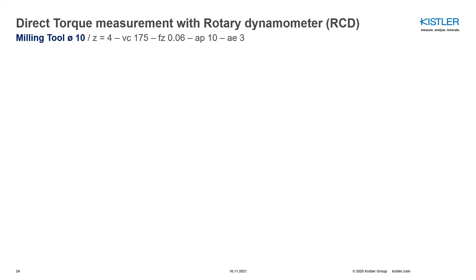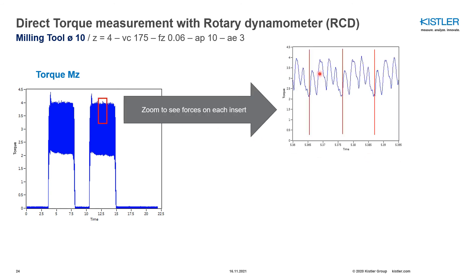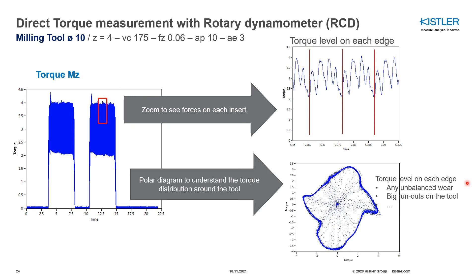In face milling with four inserts, looking at a torque measurement and zooming in, you can clearly see the moment distribution around each insert. Using Dynoware's polar diagram with piezo-based PSO technology, you can see the torque level on each cutting edge individually. By analyzing this, you can identify unbalanced wear on individual inserts or significant runout on your tool.